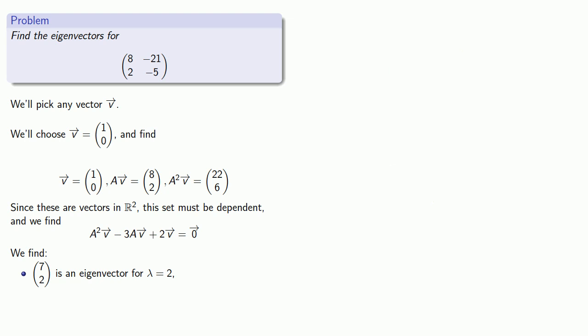Now there may be other eigenvectors, but that's okay. We can rearrange the factors. So again, we have A² - 3A + 2I. Well, this time let's factor it as (A - I) times (A - 2I). And again, we'll find (A - 2I) applied to our vector v.